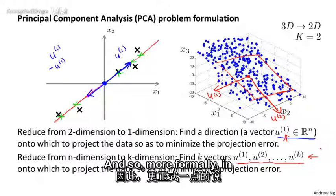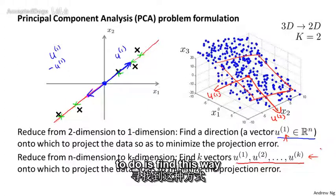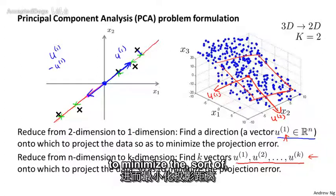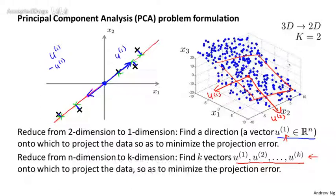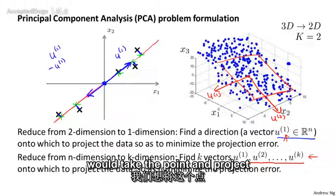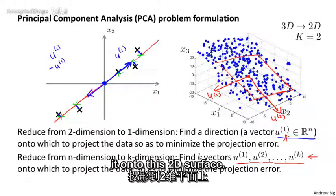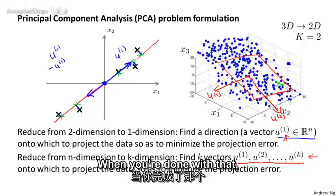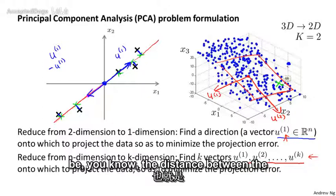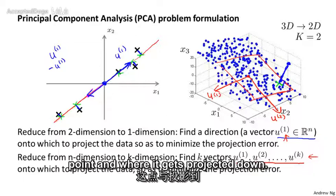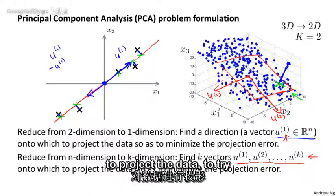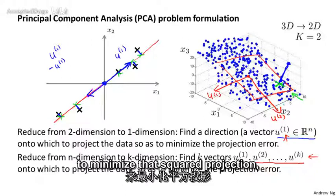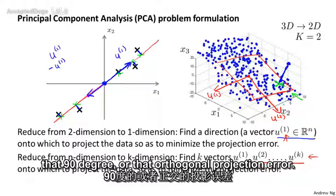More formally in PCA, what we want to do is find a way to project the data so as to minimize the projection distance — the distance between the points and their projections. Given a point, we project it onto the 2D surface and the projection error is the distance between the point and where it gets projected. So PCA tries to find a line, plane, or whatever surface minimizes that squared orthogonal projection error.